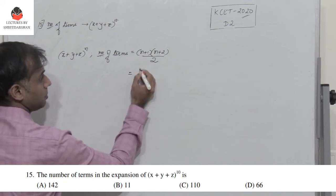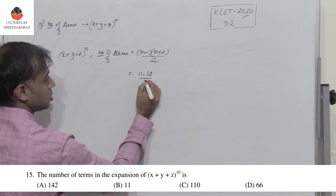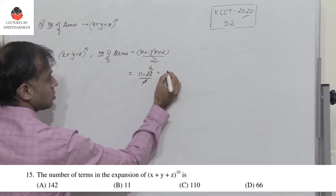So therefore, I have 10+1, which is 11, times 10+2, which is 12, divided by 2. So I get 11×6, which is 66.